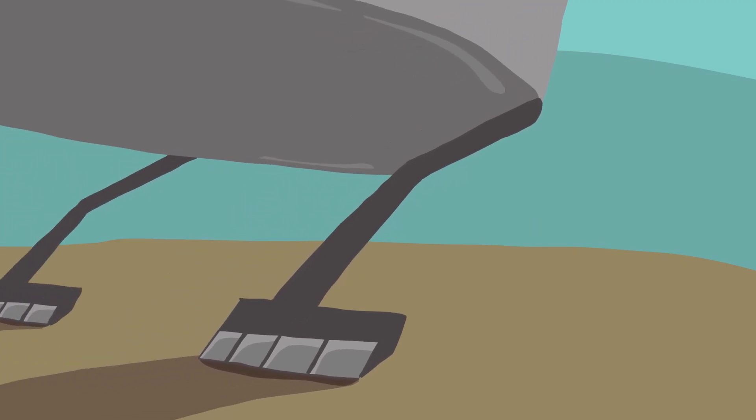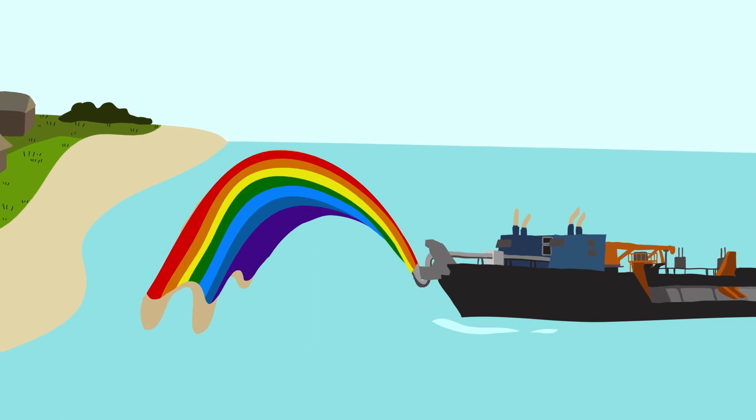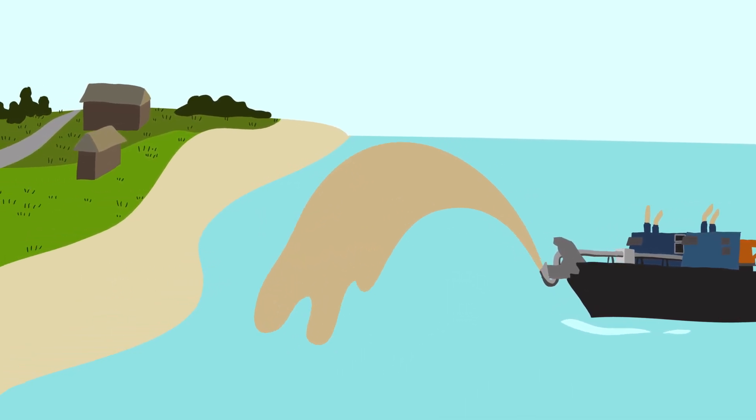It drags a suction tube along the river or sea bottom, filling the ship's hold, and drops, pumps, or rainbows the sand into a new location.